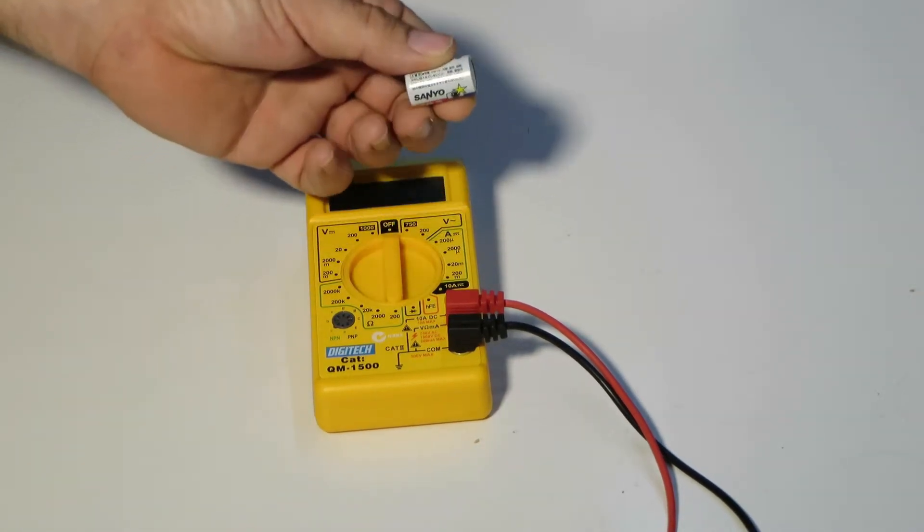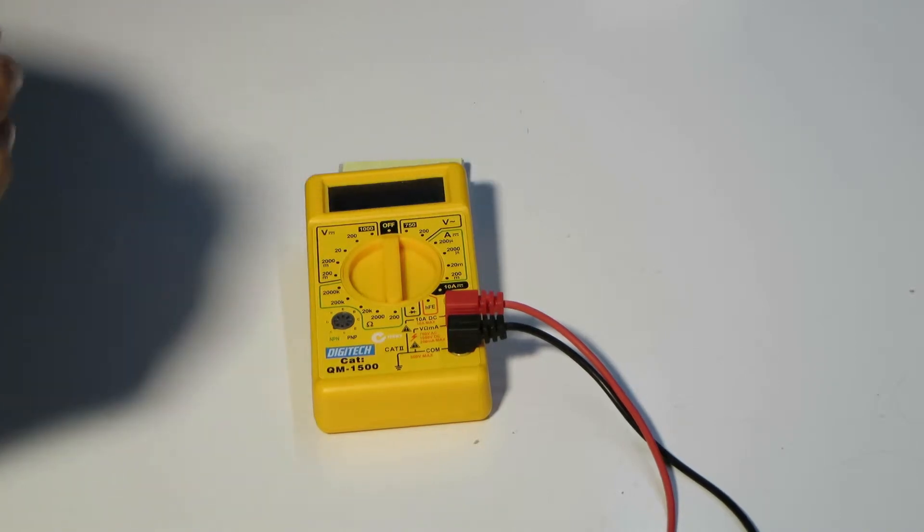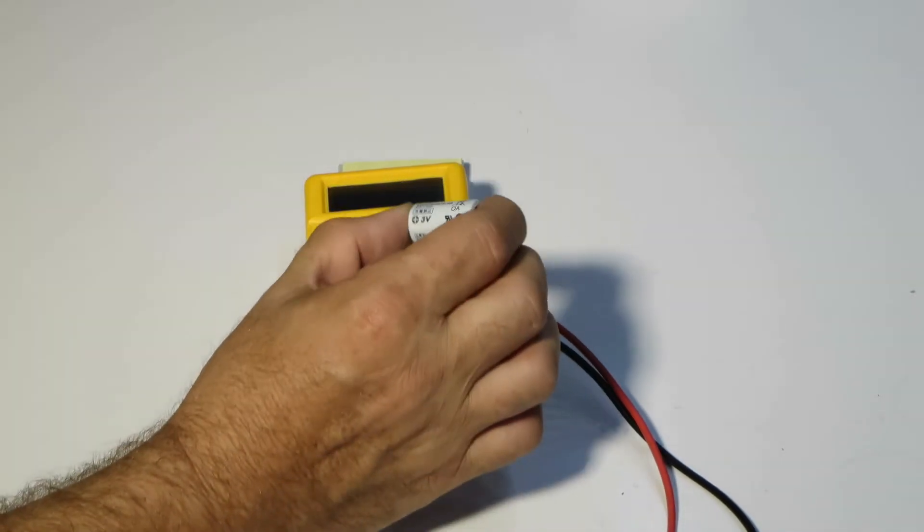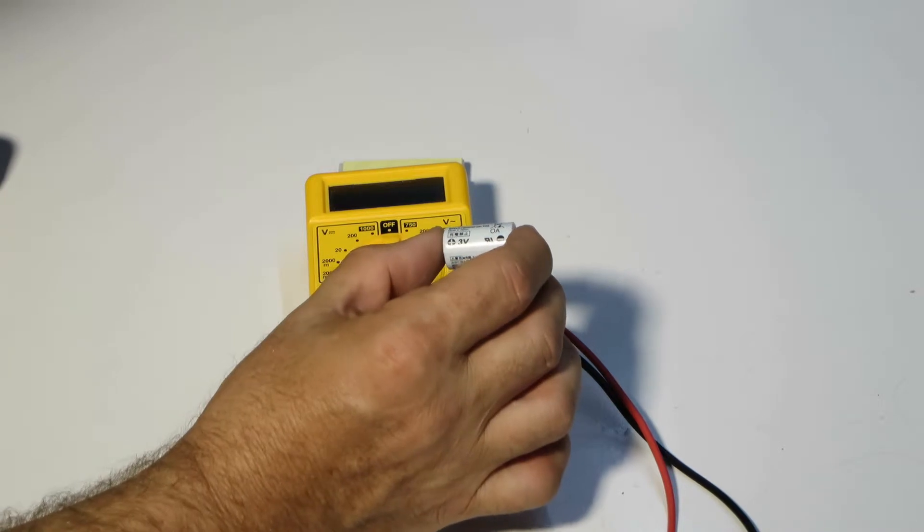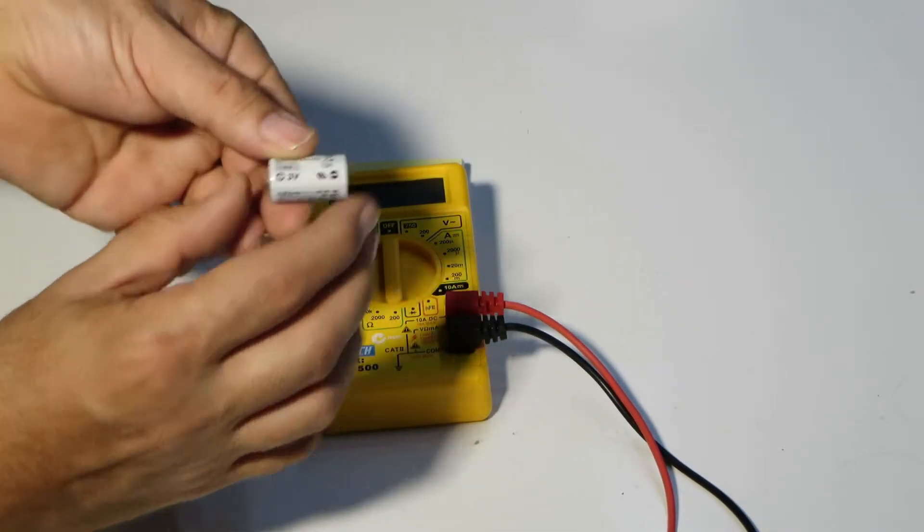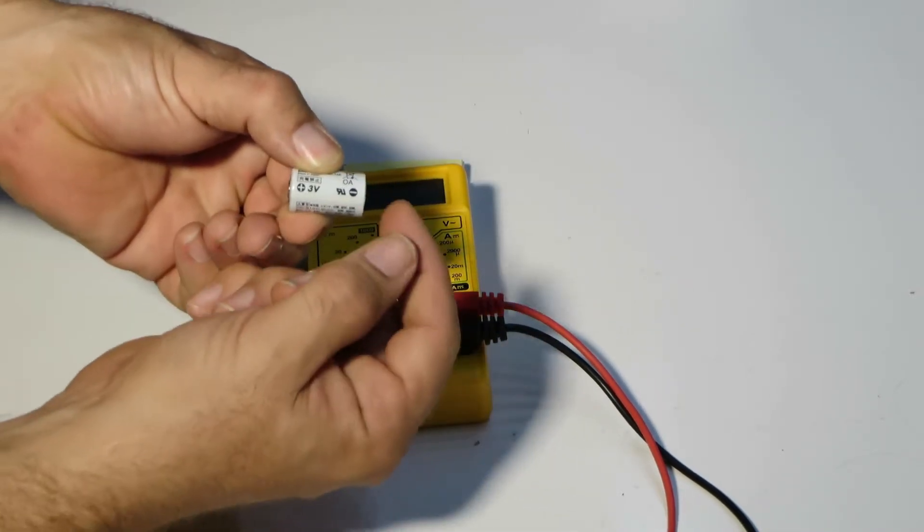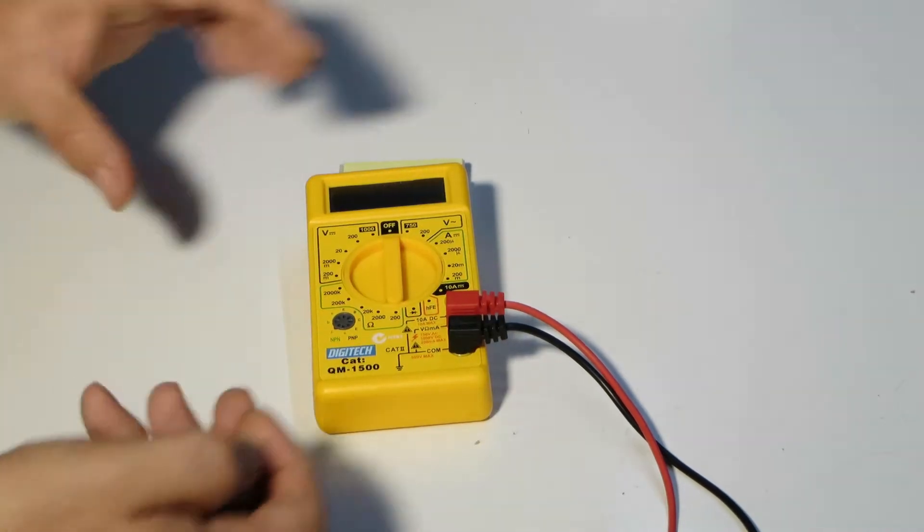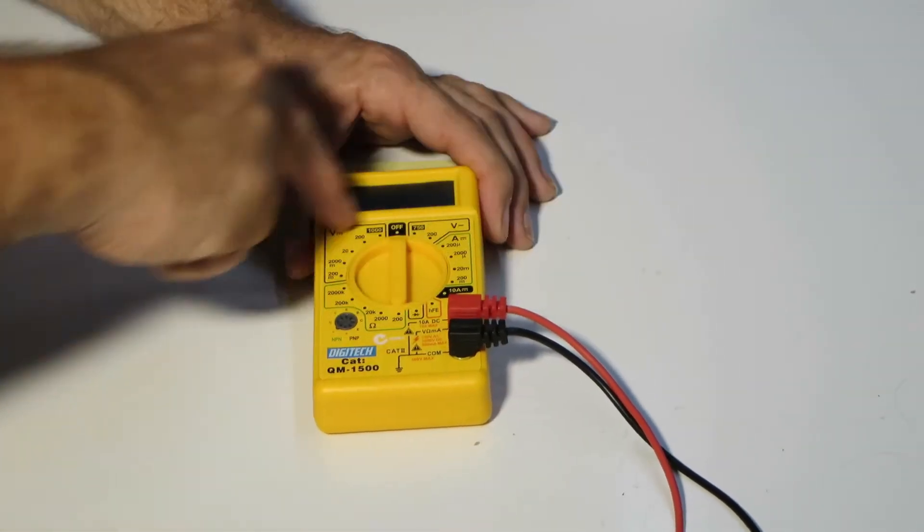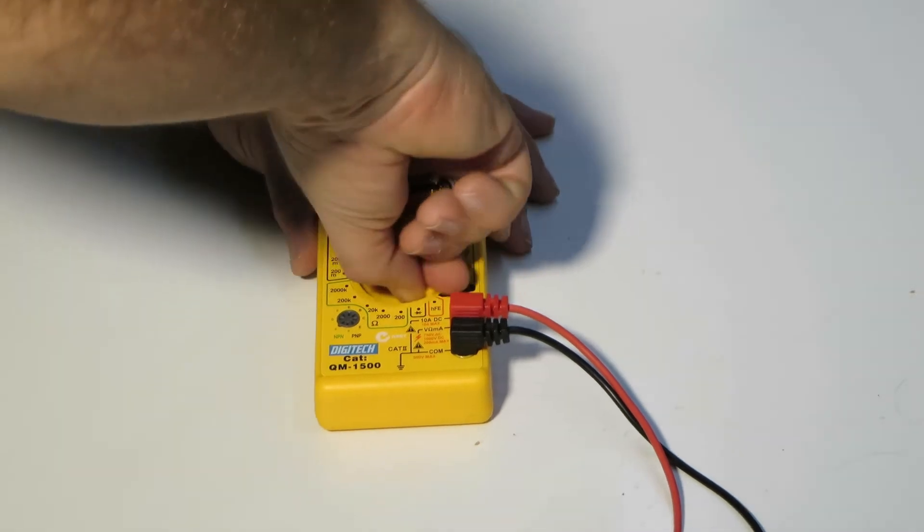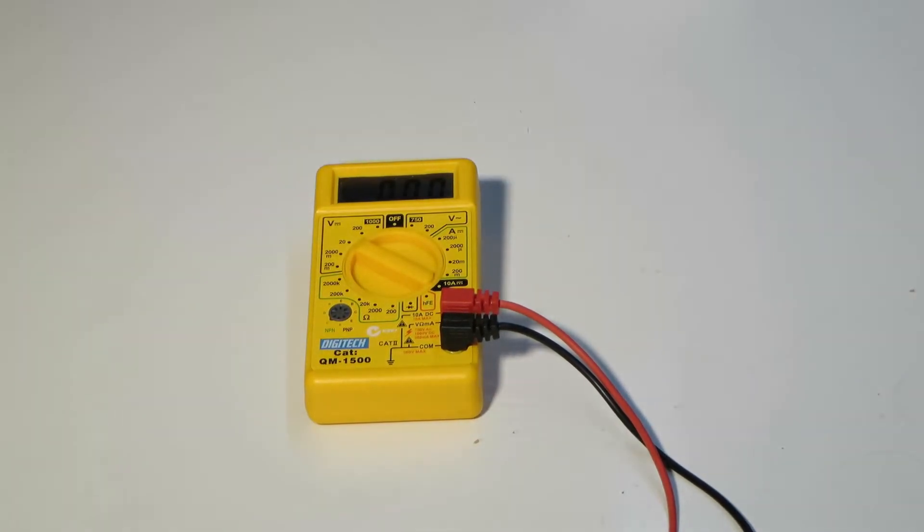But just to be sure I thought I would check this. So when I look at the battery it says 3 volts. You can see here it also says this is the positive and this is the minus. So with the meter I go to the DC settings, 20 volts, because I want to read 20 volts or less.